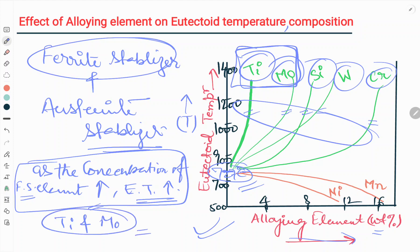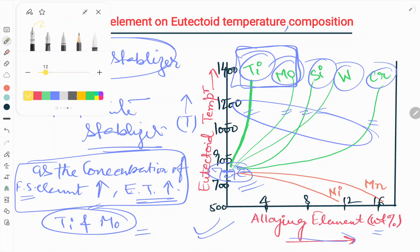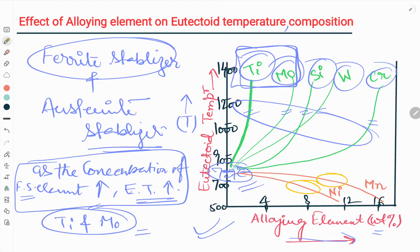Now we will see the effect of austenite stabilizers on the eutectoid temperature. As we can see from this figure, austenite stabilizers decrease the eutectoid temperature as the alloying element weight percentage increases. Similar to how Ti and Mo very sharply raise the eutectoid temperature with very small percentages, austenite stabilizers show a sharp decrease.